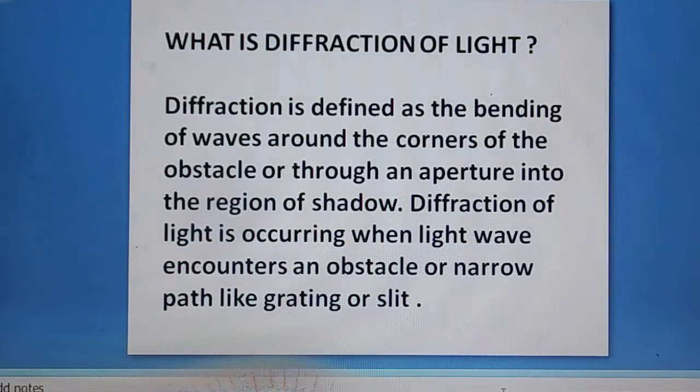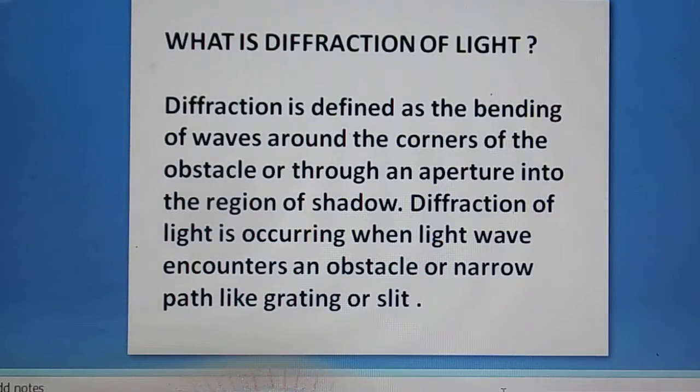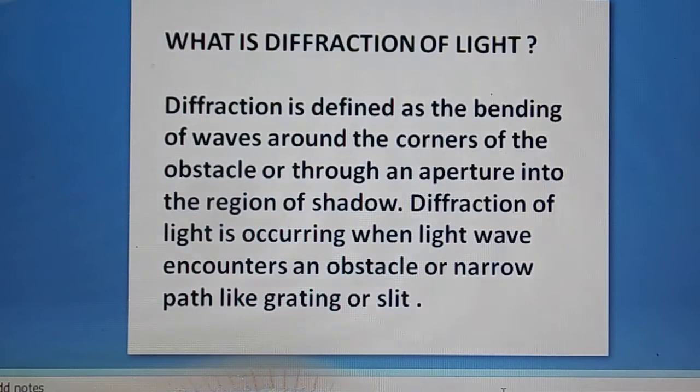What is diffraction of light? Diffraction is defined as the bending of waves around the corners of obstacles or through an aperture into the region of shadow. Diffraction of light is occurring when light waves encounter an obstacle or narrow path, or narrow lines like gratings or slits.